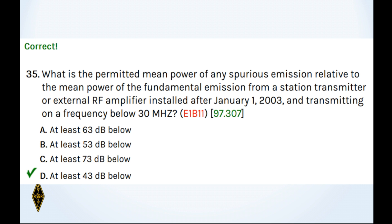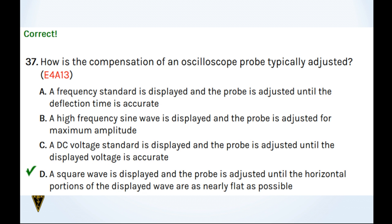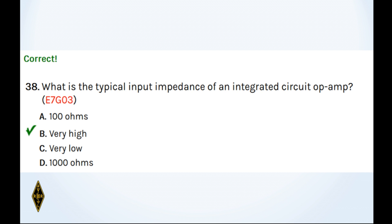And which of the following is a common use of a hot carrier diode? Well, that's a VHF or UHF mixer or detector. And how is the compensation of an oscilloscope probe adjusted? We did it here. We connected the probe to a square wave output. And then we adjusted the tilt of the square wave. And 38, what is the typical input impedance of an integrated circuit op amp? A very high. And what is the output impedance of an integrated circuit op amp? A very low. You don't know exactly what, but high input, low output.